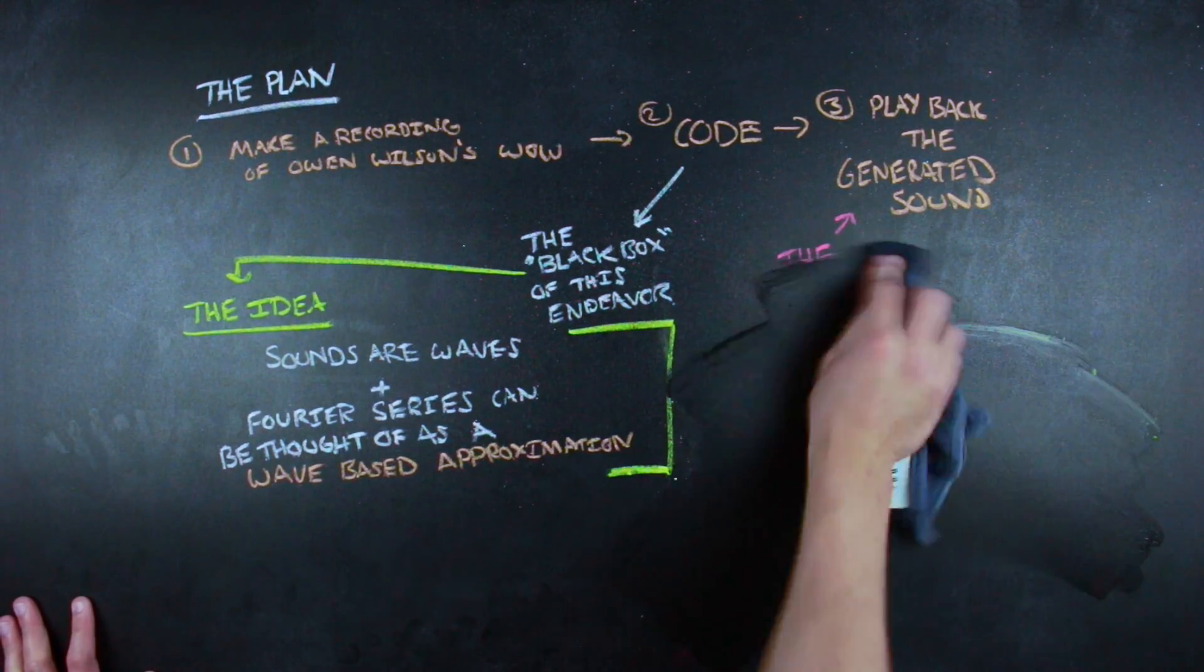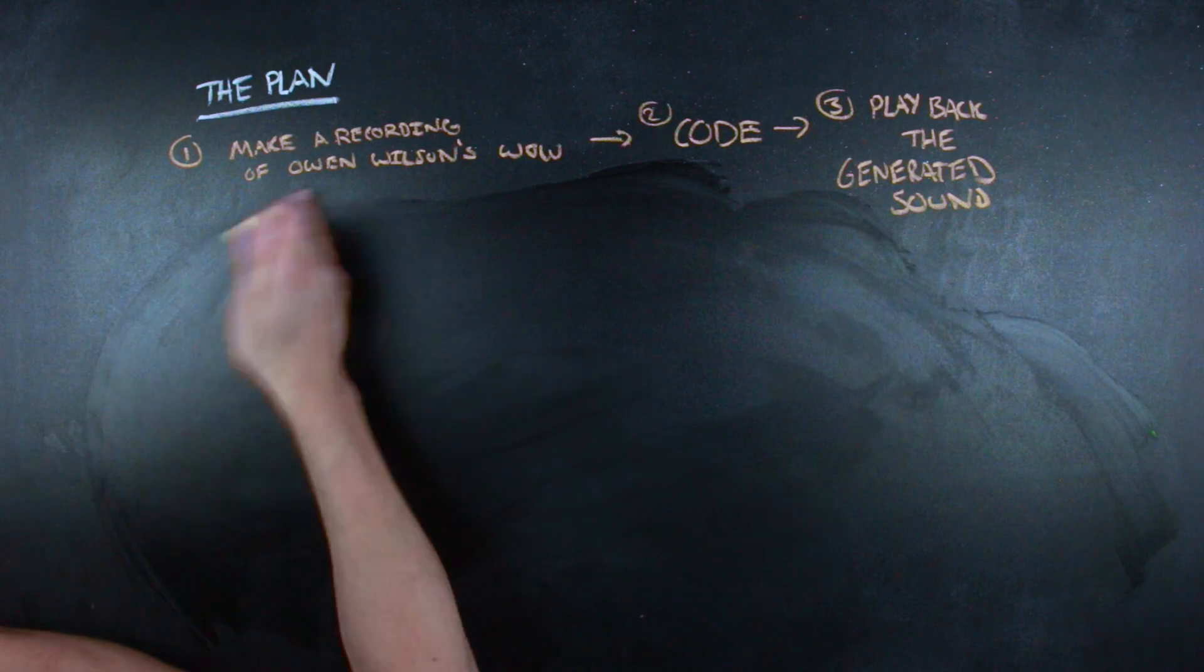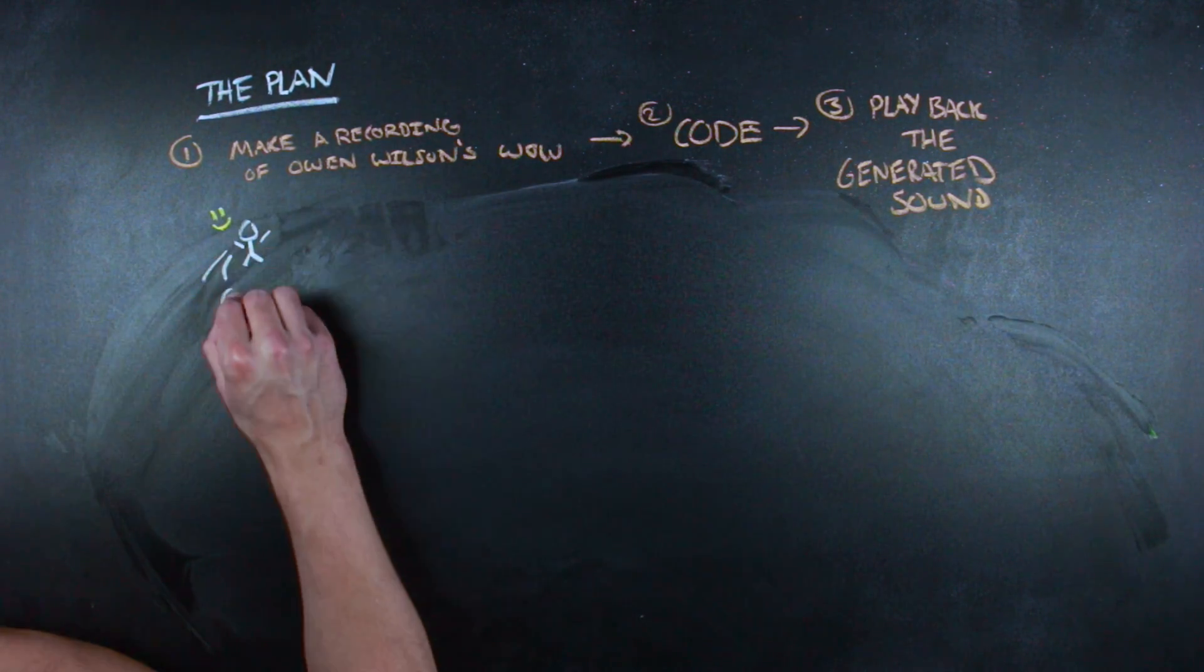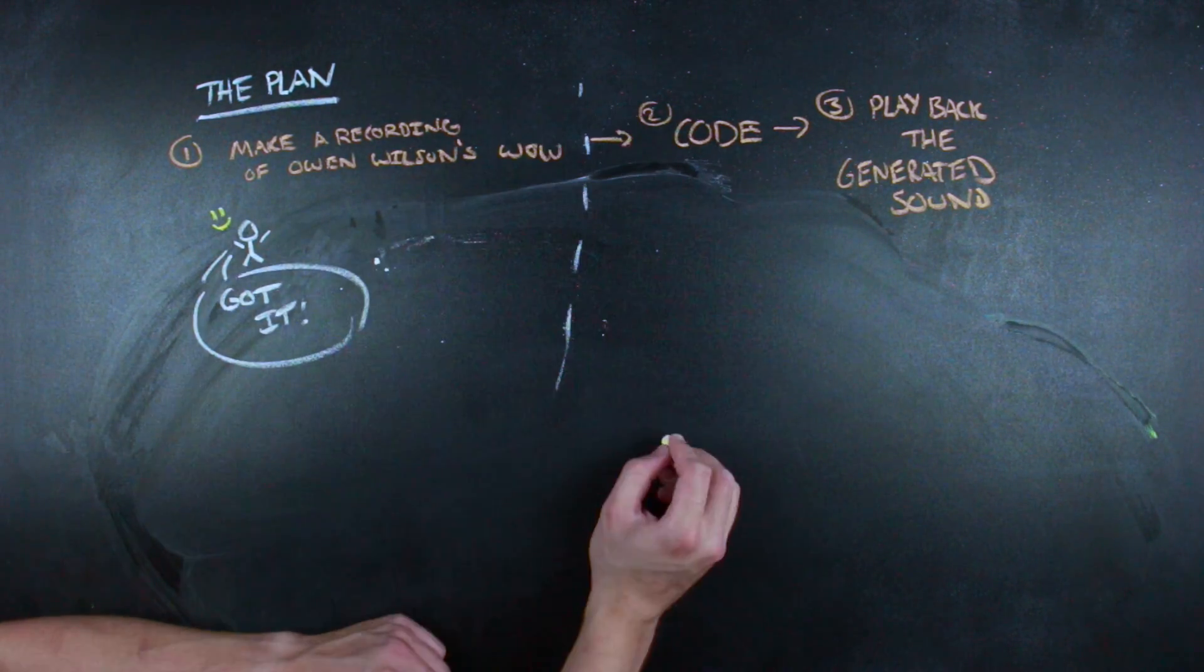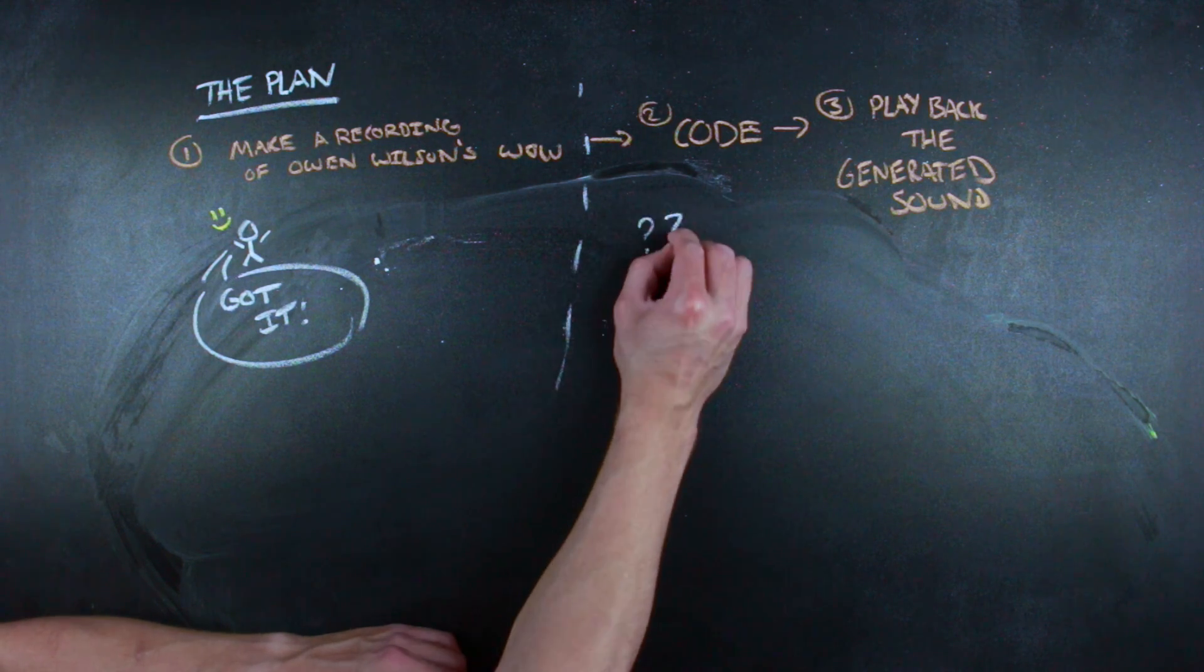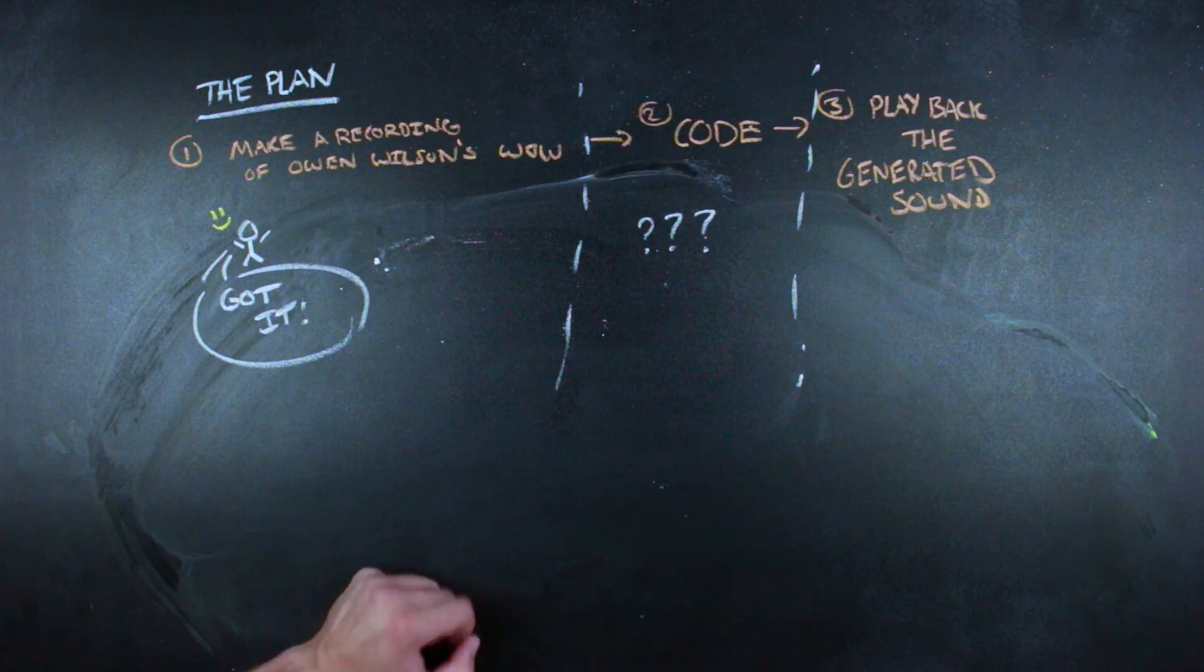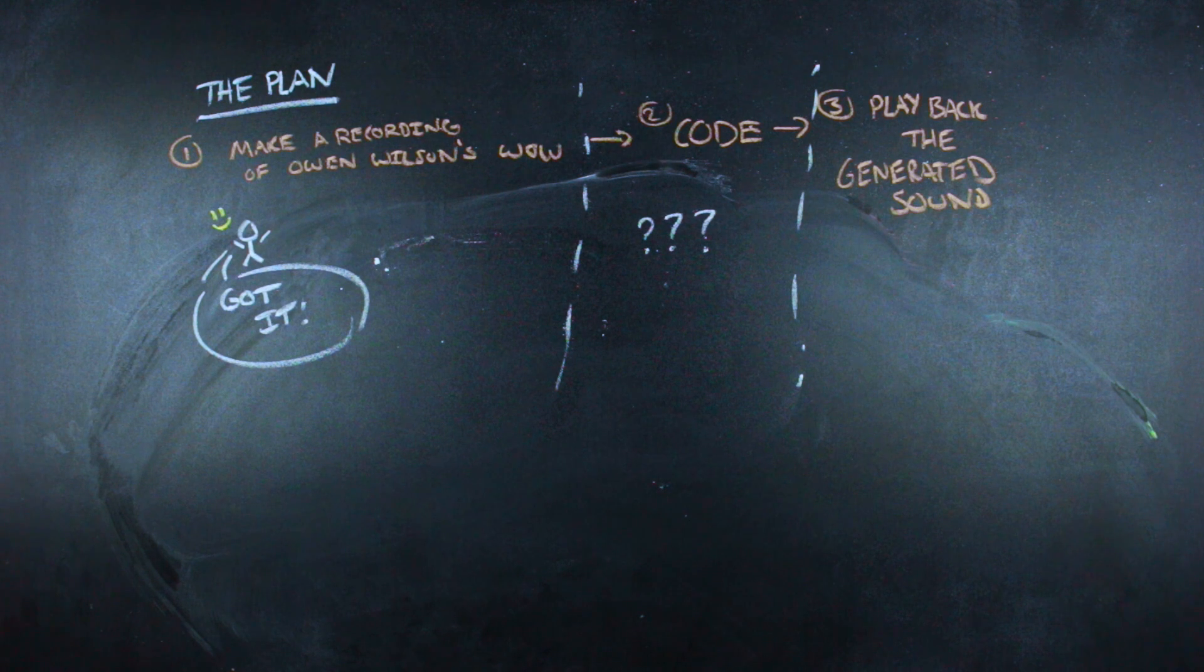So now that we had the sound, all we needed to do was create the code that would transform the sound into a series of sine and cosine waves, and then use that Fourier series to generate a new processed sound that would play back the wow. So, how was I doing in this coding endeavor? Not great. I have forgotten all of my Python skills, and I don't really understand what's in a wav file, and I don't have the whole process of what I actually need to do with that data down to a T.